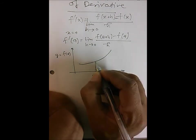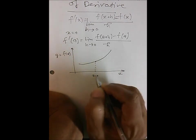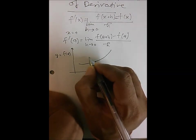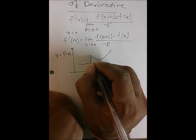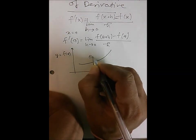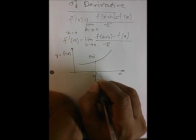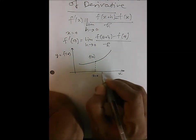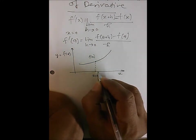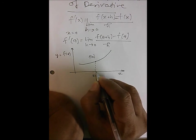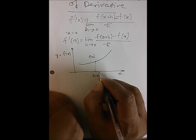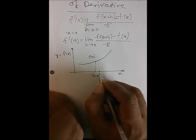At this particular point a, we have the value of the function at f(a). And if we take a point on the x-axis which is just slightly to the right of it, this is x equal to a plus h.